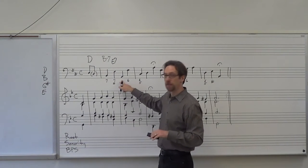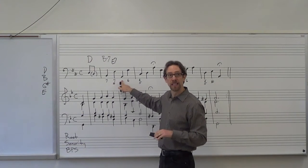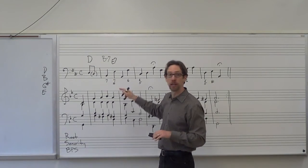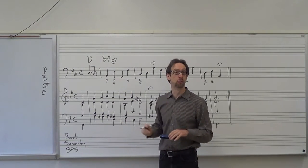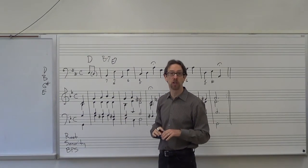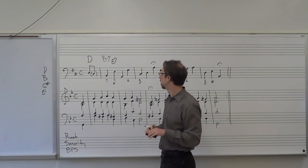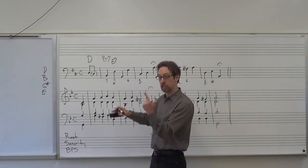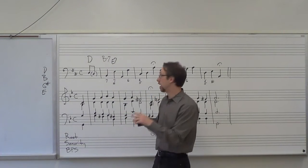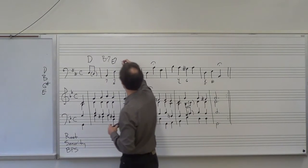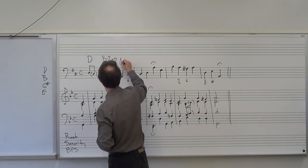Our next figured bass is just an A with nothing underneath it, meaning root position triad. A, C sharp, E — that is an A major triad.